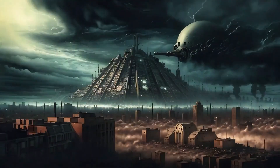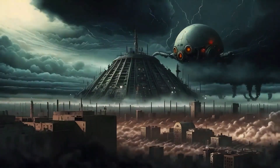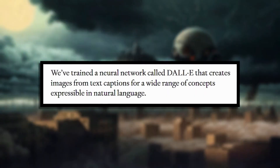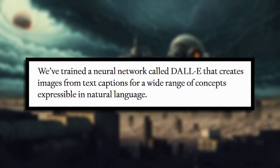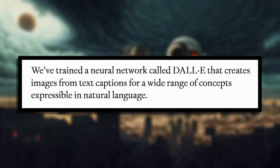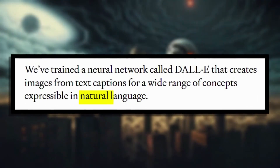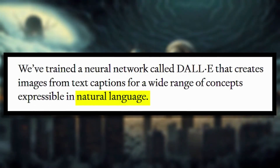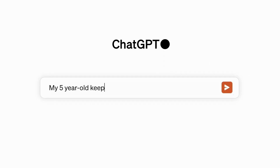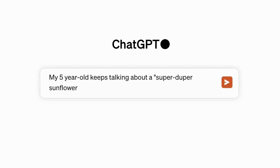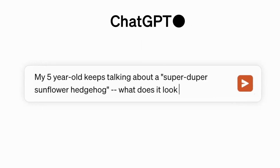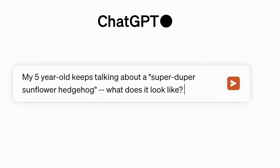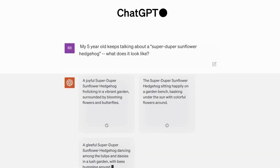Now, with the reveal of DALL-E 3, OpenAI says this newest version will have an even stronger comprehension of natural language and context. It can take more vague conversational prompts and turn them into images that perfectly match the intention behind the words.